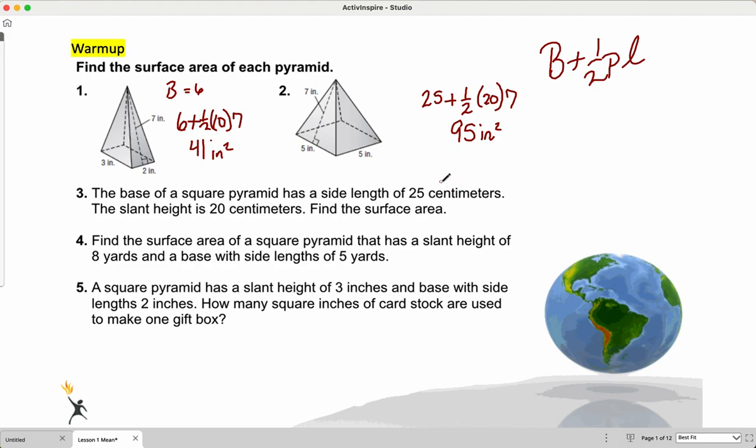Moving to number three, where we don't have pictures, but we still have everything we need, a square pyramid, side length of 25. So 25 times 25 is 625, plus our one-half times our perimeter, which is 100, times our slant height, which is 20. So really, what we're looking for, get the final answer, 1,625 centimeters squared.